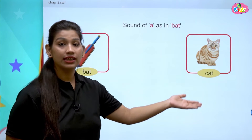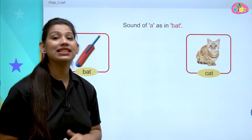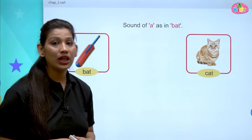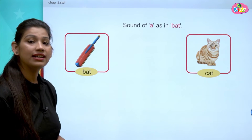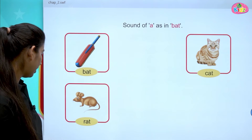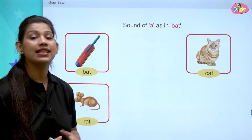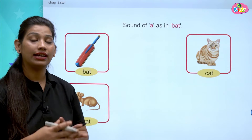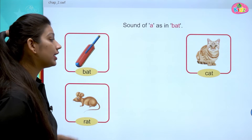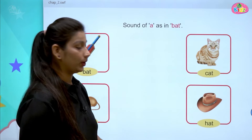Next is C, A, T — Cat. C says K, A, T. K, A, T — Cat. The next picture we have is R, A, T — Rat. R says R, A, T becomes Rat. Here you can see all of the words are ending with A, T — the AT sound.